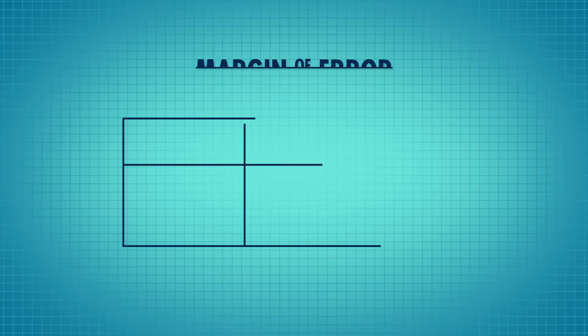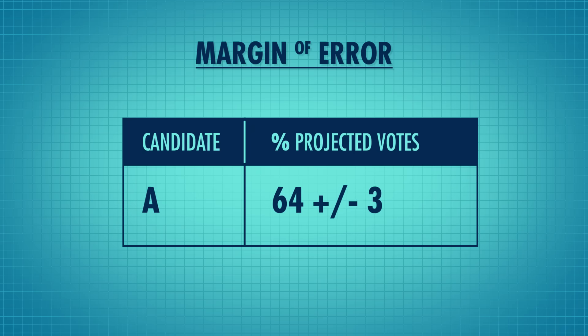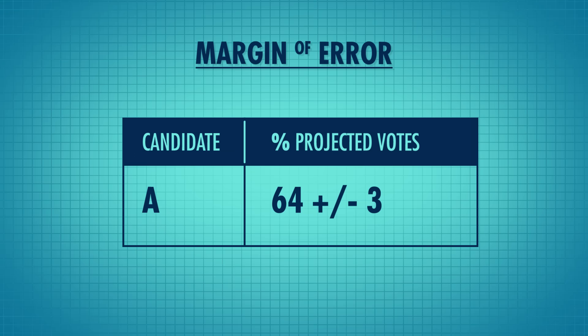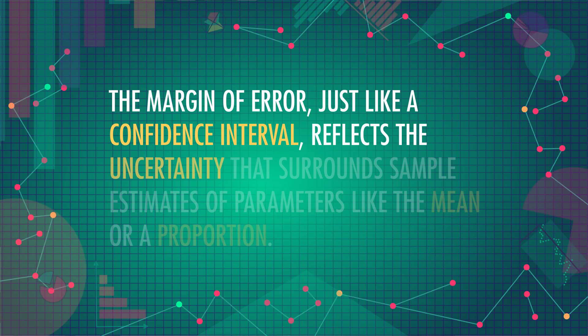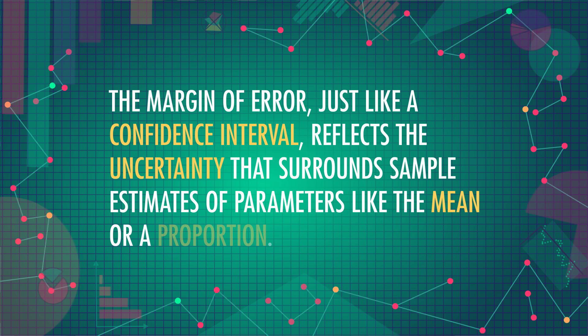One place you may have seen confidence intervals in the wild is in the news during election season. When newscasters report results from exit polls, they'll usually say something like: "Candidate A is tracking at 64%, with a margin of error of 3%." The margin of error tells you how far the bounds of the confidence interval are from the mean. Just like a confidence interval, the margin of error reflects the uncertainty that surrounds sample estimates of parameters like the mean or a proportion. If a poll shows a presidential candidate tracking at 64% of the vote, plus or minus 3%, we shouldn't be surprised if the true vote turns out to be 61%, since that's within the margin of error. Values inside the margin of error, or confidence intervals, are values that might be reasonable estimates of the true population parameter.